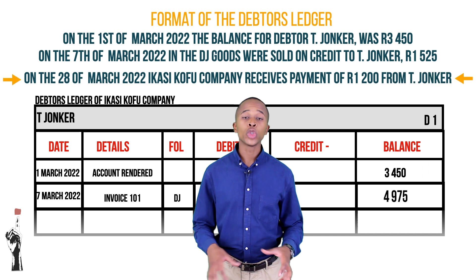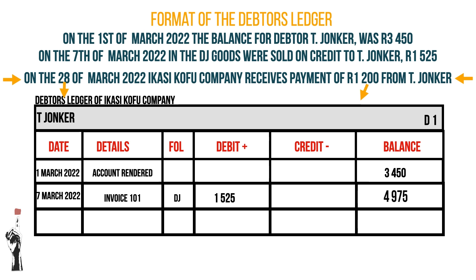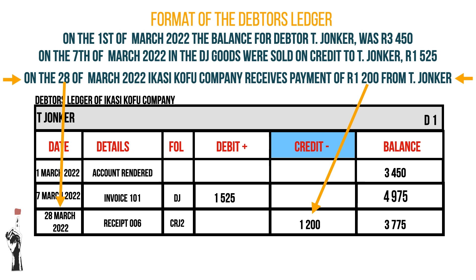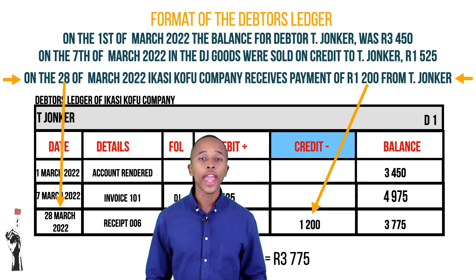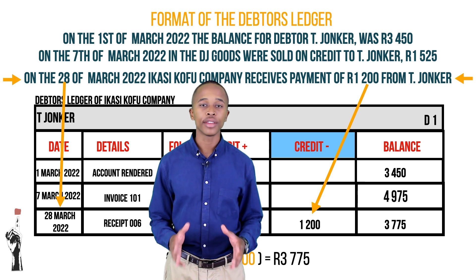The second transaction is where Ikasi Kofu Company receives R1,200 — a payment on T Younger's account on the 28th of March. This means T Younger paid part of his account and now owes Ikasi Kofu Company less money; his debt decreases. That is why this transaction is recorded on the credit side, and T Younger's new balance is R3,775, which is R4,975 minus R1,200. At the end of March, T Younger owed Ikasi Kofu Company a total of R3,775.